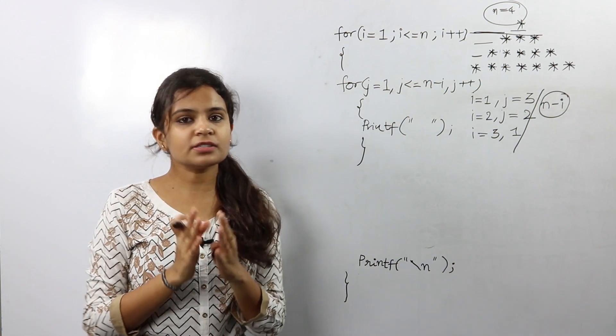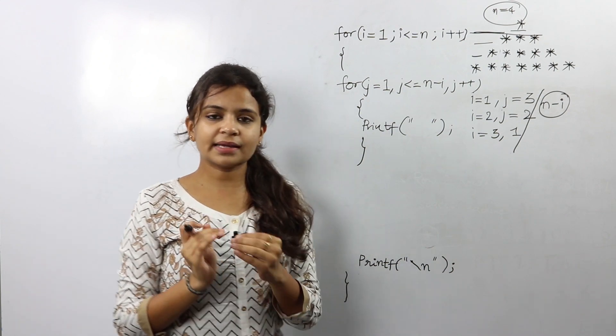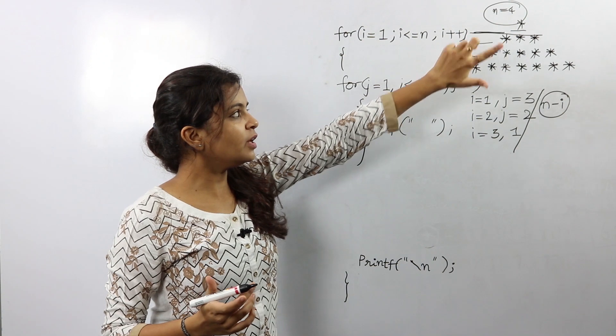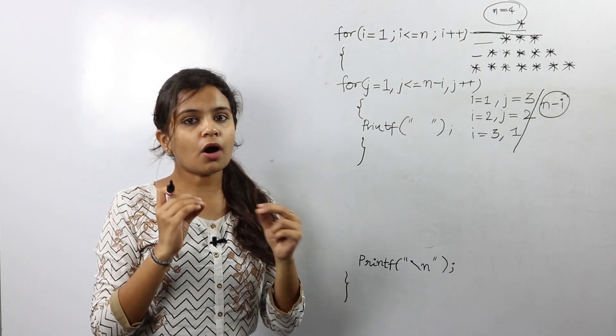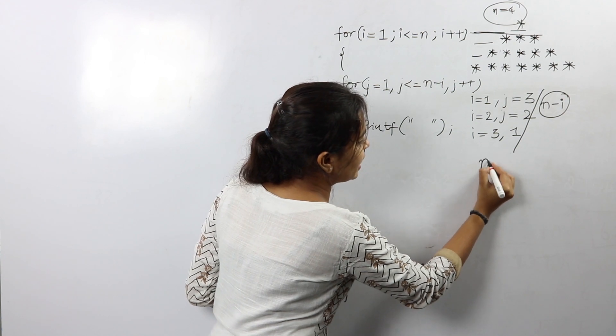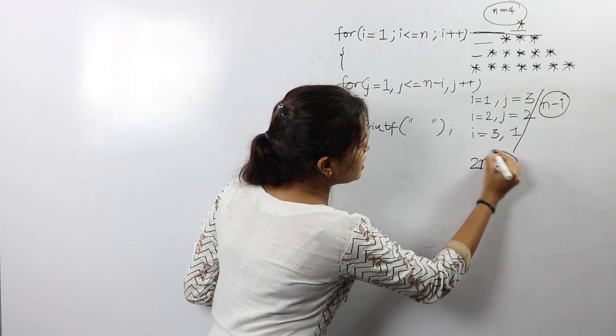The only thing left is to print the stars. So this will be done using the kth loop. So as analyzed previously, every row has consecutive odd number of stars. This means the generalized pattern can be 2n minus 1.